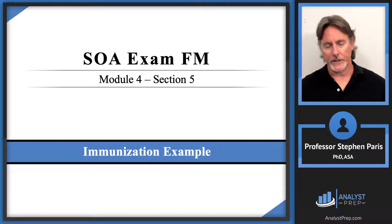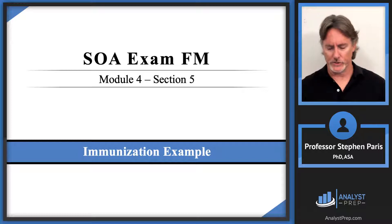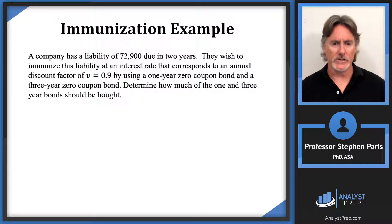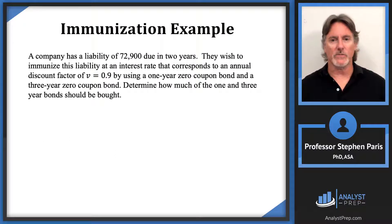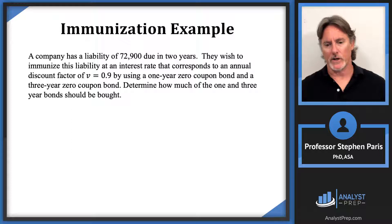In this video we're going to do an immunization example. This is a basic example of immunization. A company has a liability of $72,900 due in two years and wishes to immunize this liability at an interest rate corresponding to an annual discount factor of V = 0.9, using a one-year zero coupon bond and a three-year zero coupon bond.